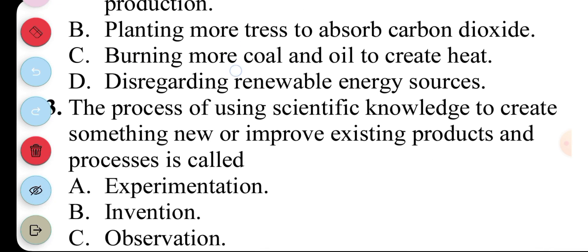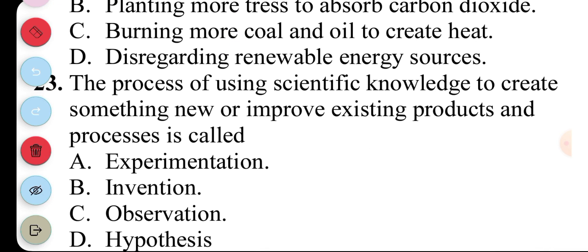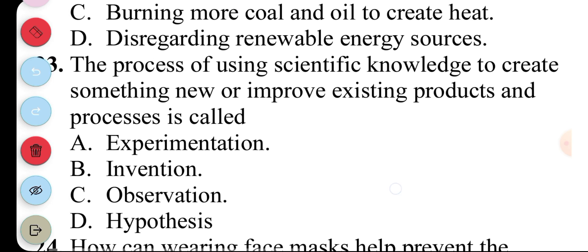Question 23. The process of using scientific knowledge to create something new or improve existing products. The process is called A. Experimentation, B. Invention, C. Observation, D. Hypothesis. The answer to question 23 is B. Invention.